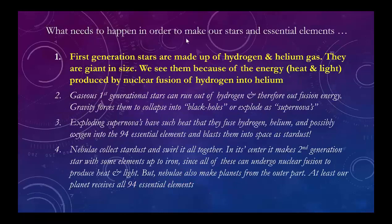There are a number of things that have to happen to make stars and the 94 essential elements. The first step is looking at the first-generation stars coming out of singularity. As the universe expands, they get bigger and bigger. The gas — both hydrogen and helium — extends out, accumulates because of gravity, and they continue to generate energy by nuclear fusion of hydrogen into helium.